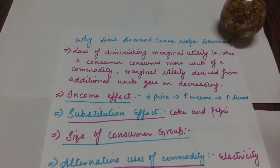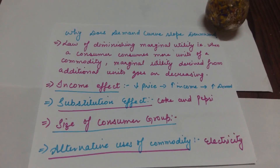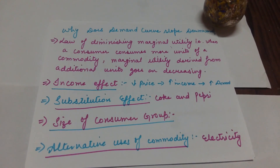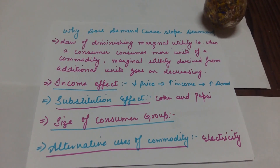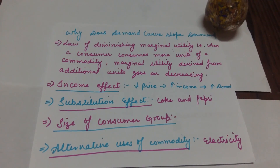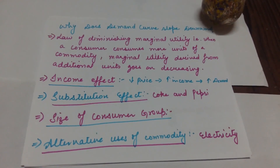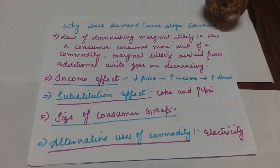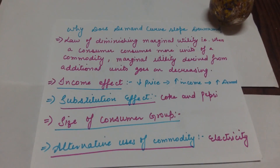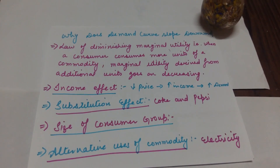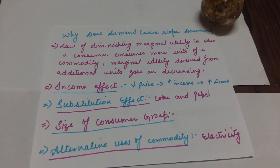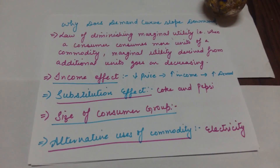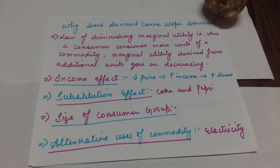The main question is: why does the demand curve slope downward? First, the Law of Diminishing Marginal Utility — when you consume more and more of a commodity, the utility or satisfaction from that commodity decreases. Second, the Income Effect — if your price is decreased, your real income will increase and you will buy more, so your demand will be more. If your price is increased, your real income will decrease and you will demand less.